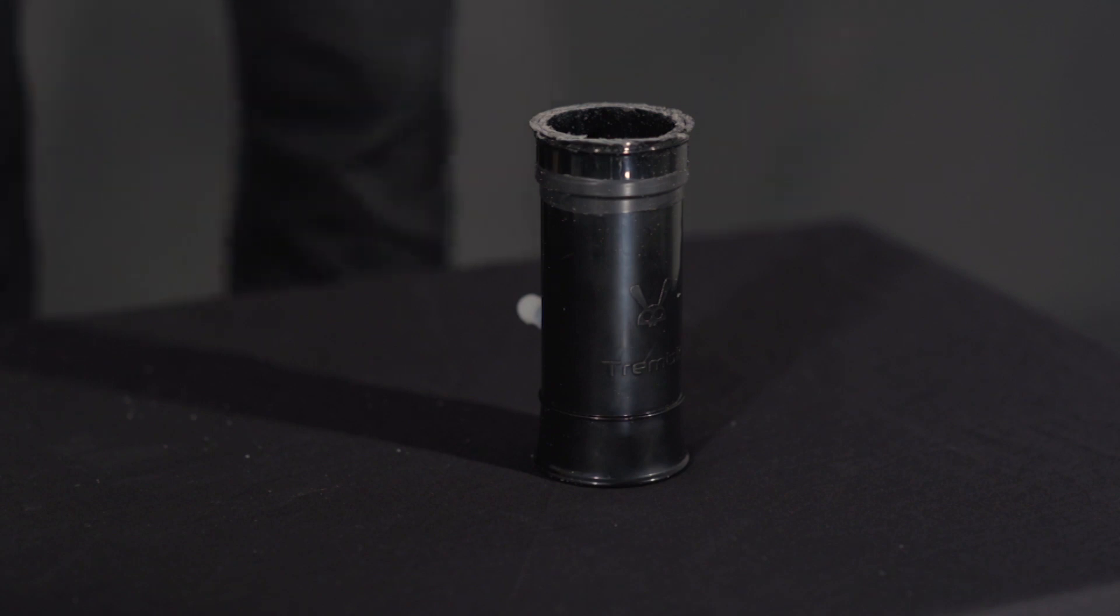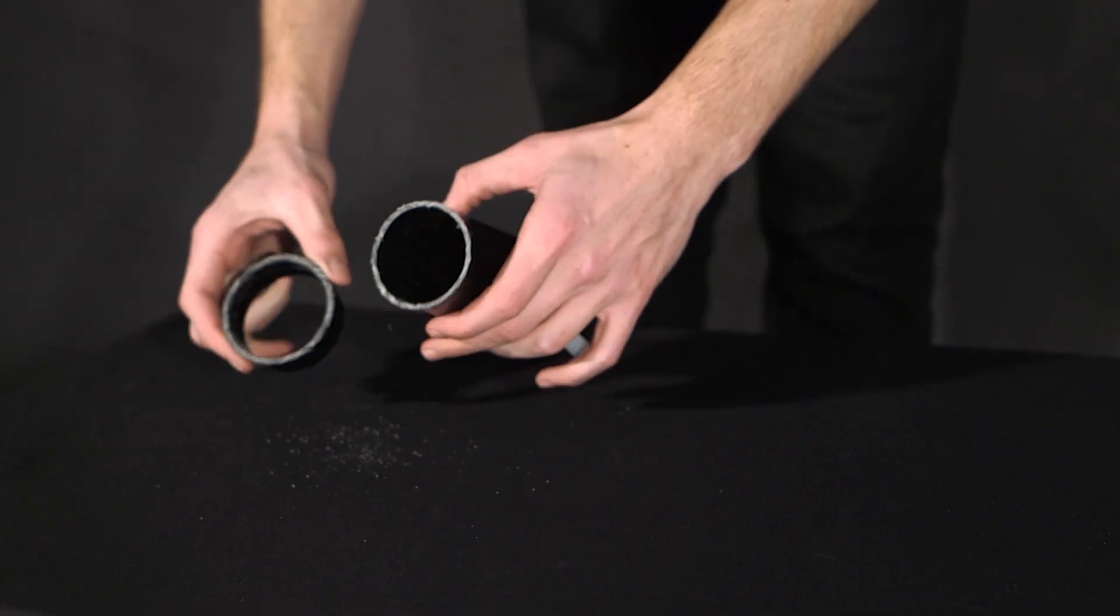Discard the excess section of the receiver. Remove the cutting ring and keep for future reference.